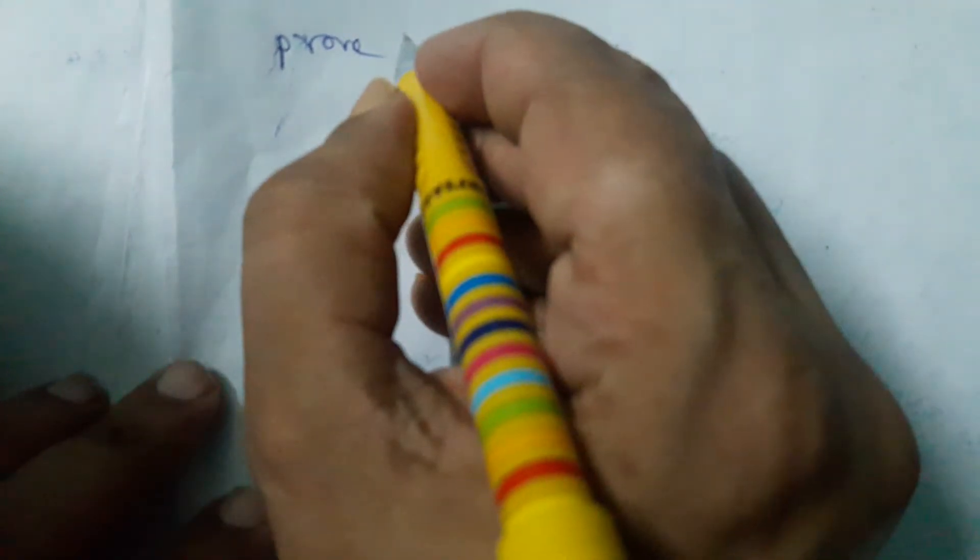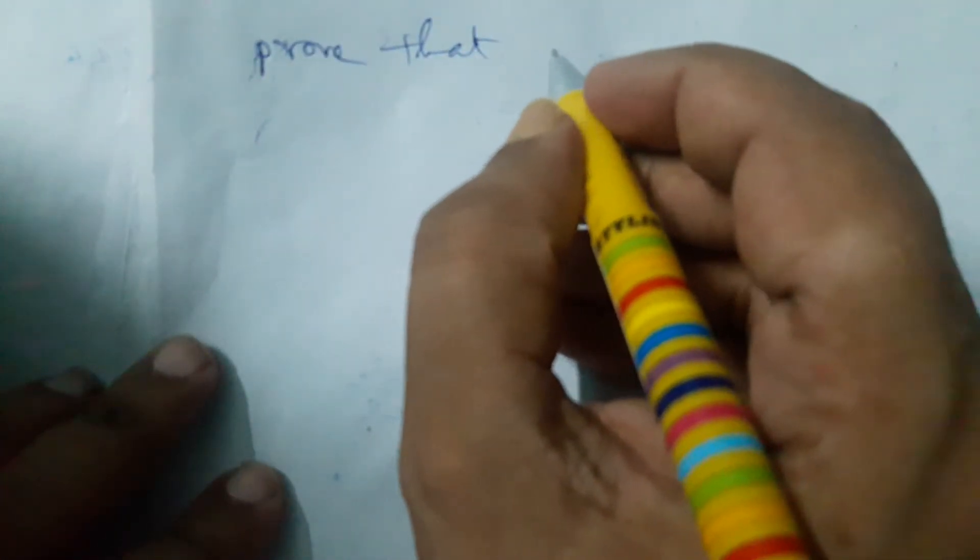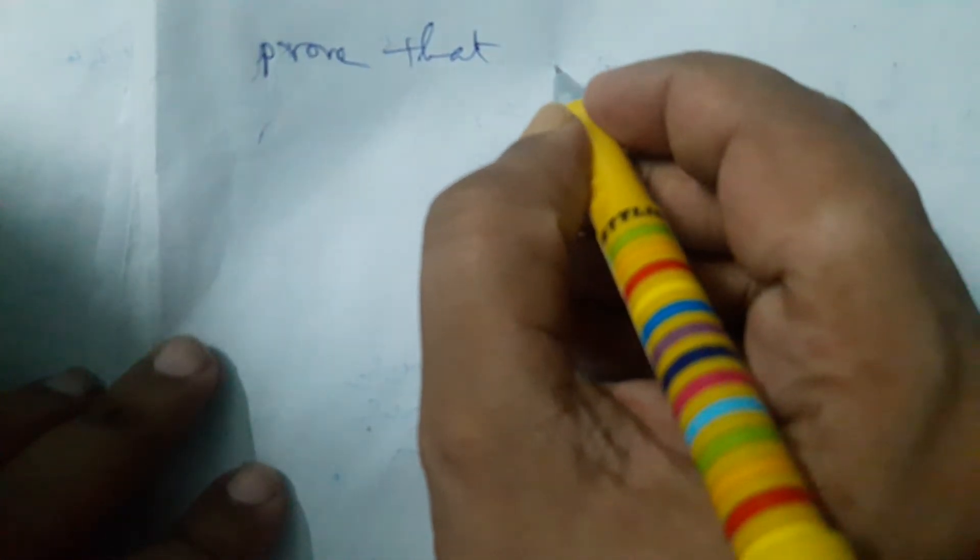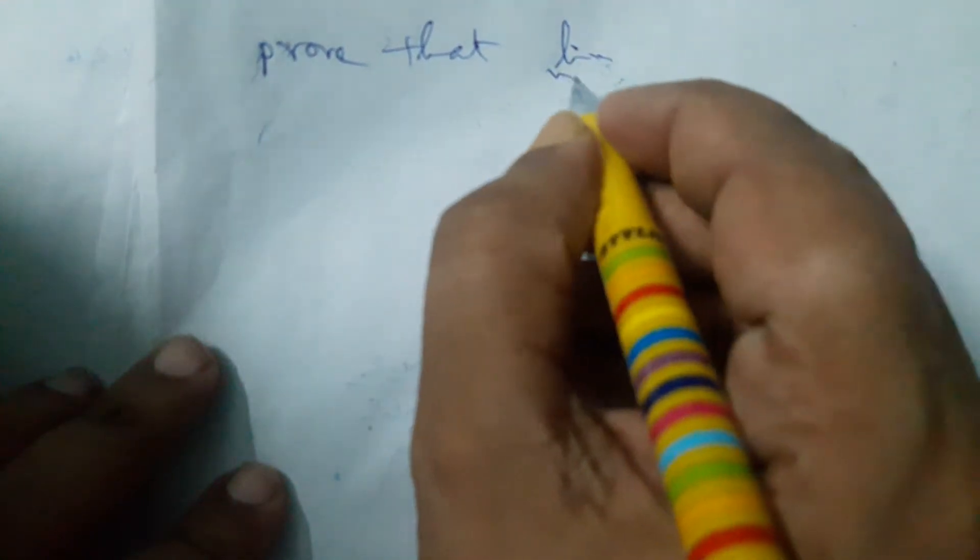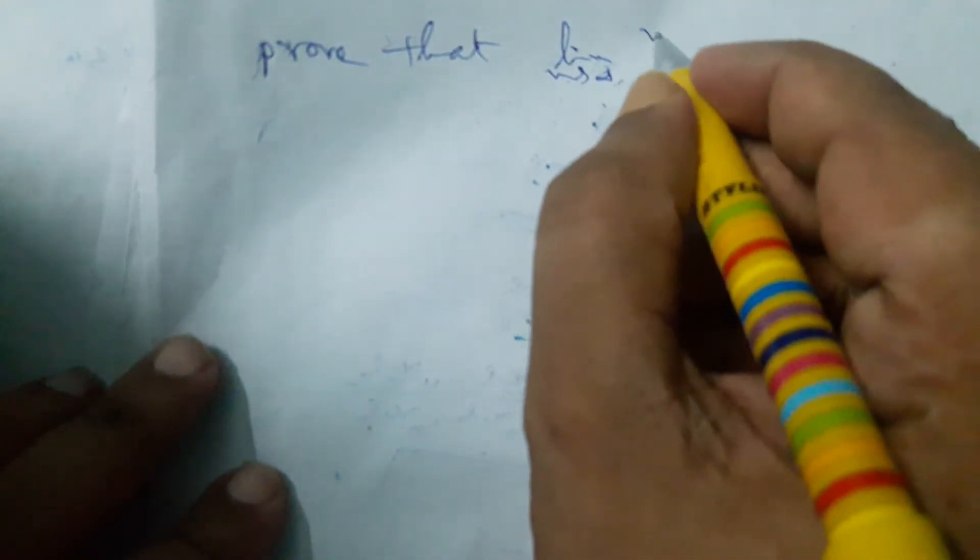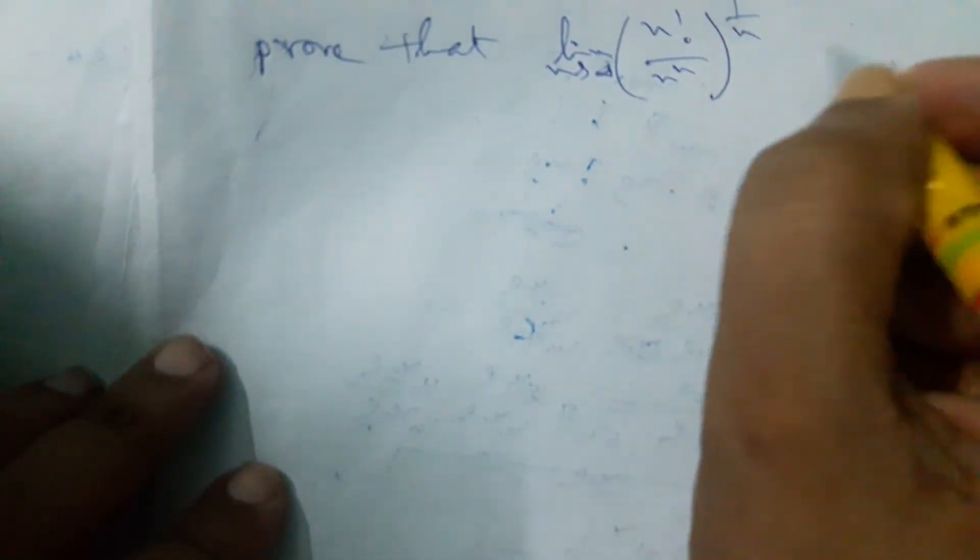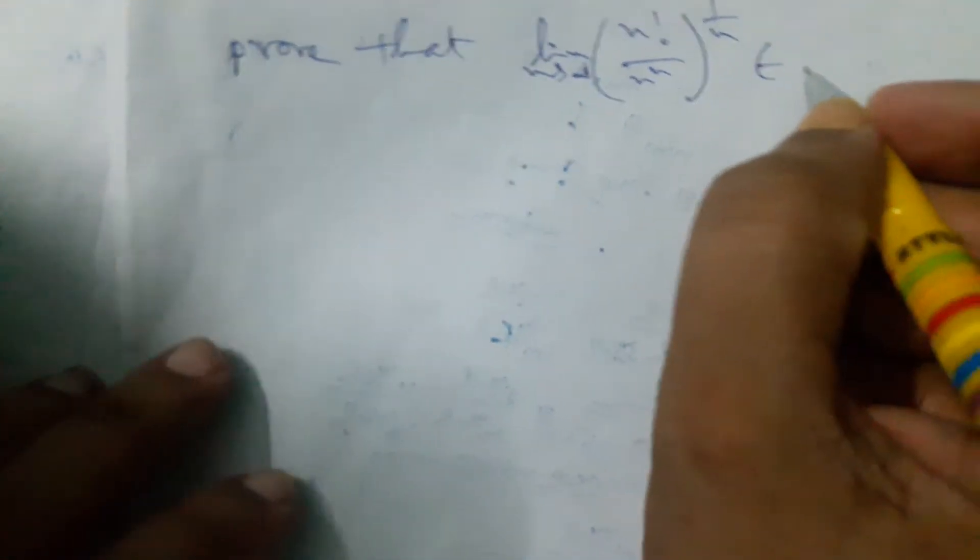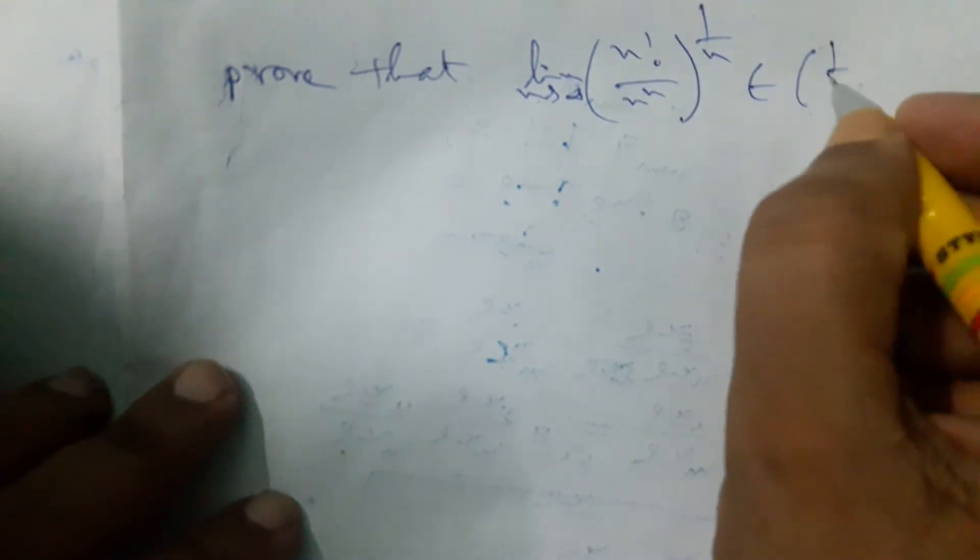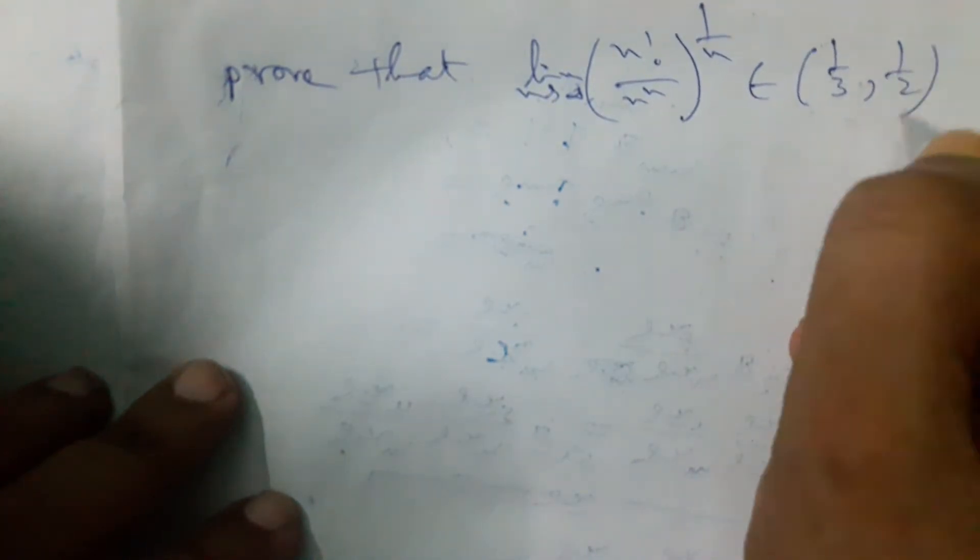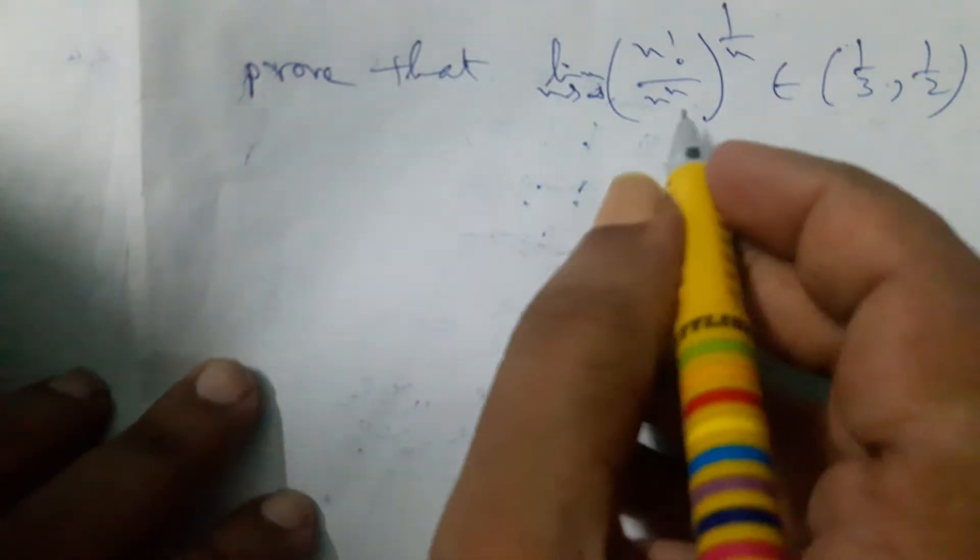Prove that limit as n tends to infinity of n factorial by n to the power n, whole to the power 1 by n, belongs to the open interval 1 by 3 and 1 by 2. How to prove it?